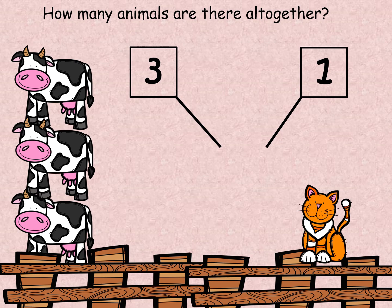How many all together? Let's count starting at the cows. One, two, three and four. There are four animals all together.